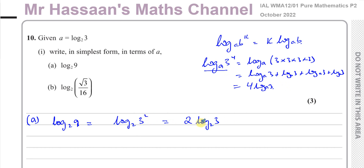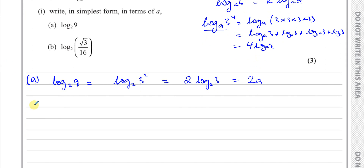So this can be written as 2 times log to the base 2 of 3. Since log to the base 2 of 3 is equal to a, we can write this as 2 times a, just replacing log to the base 2 of 3 with a. So we've now written log to the base 2 of 9 in terms of a as 2a.